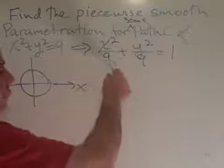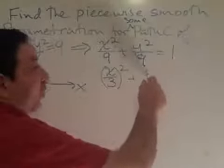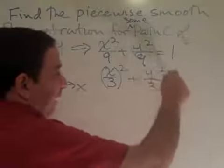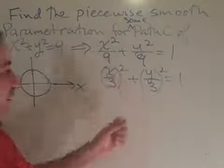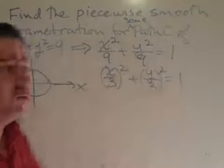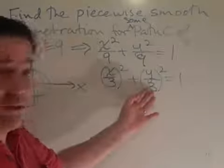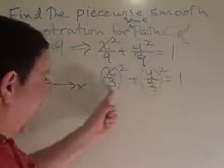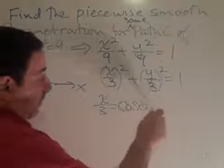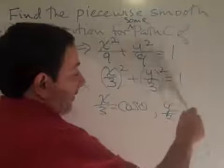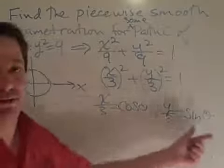So x squared over 3 squared, that's the same as x over 3 squared plus y over 3 squared equals 1. Now this really looks like cosine squared theta plus sine squared theta equals 1. If I call x over 3 cosine theta, and I call y over 3 sine theta, it really didn't matter which I called sine theta and cosine theta.